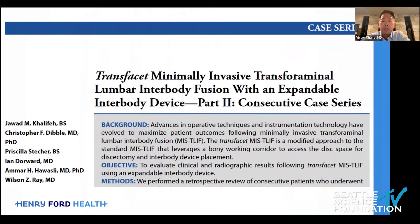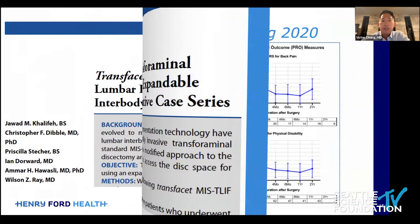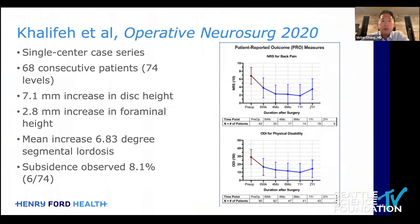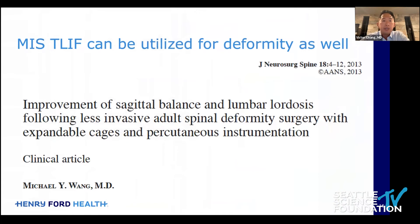Part two of Dr. Ray's paper looked at their experience using this particular cage across about 68 cases. They saw on average seven millimeters of increased disc height — quite good for a TLIF — 2.8 millimeters of increased foraminal height providing indirect decompression, and almost seven degrees of segmental lordosis, which is fairly significant given that traditional MIS TLIF is actually a kyphosing procedure. They did observe some subsidence and a few cases requiring reoperation, so like any technique there are drawbacks — as Dr. Pimenta noted, sometimes you're trading complications between different techniques.